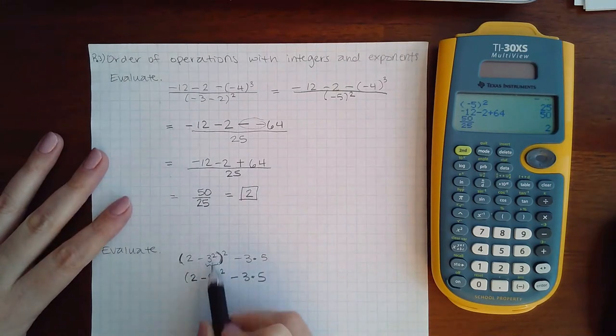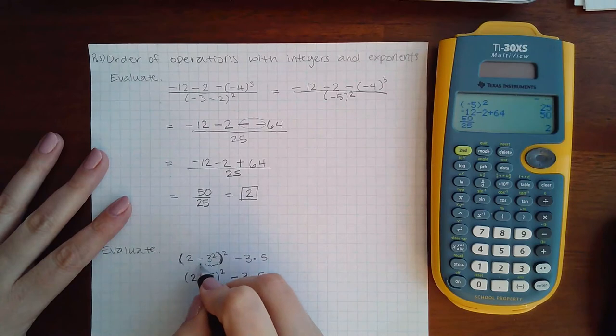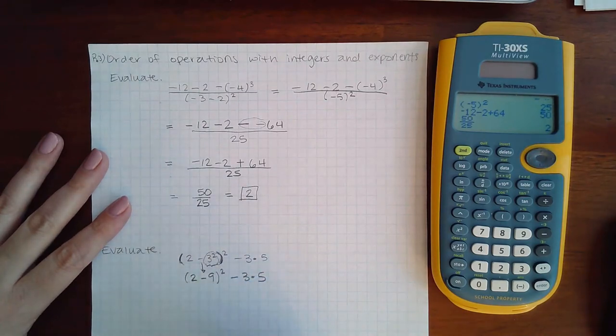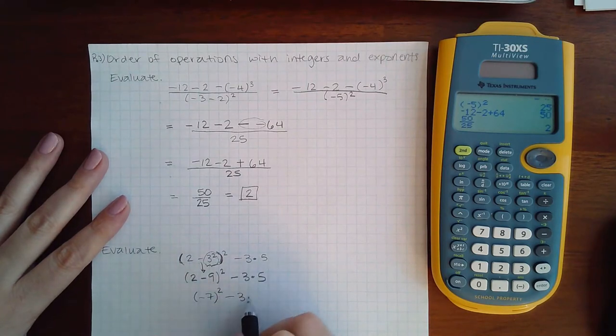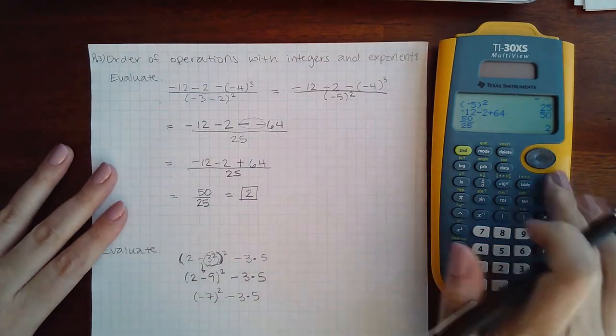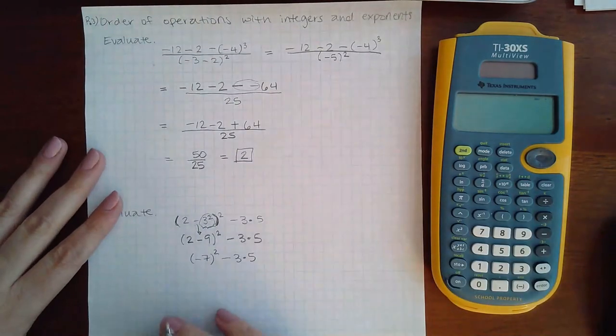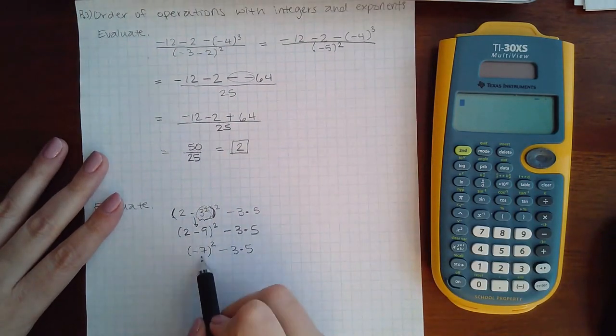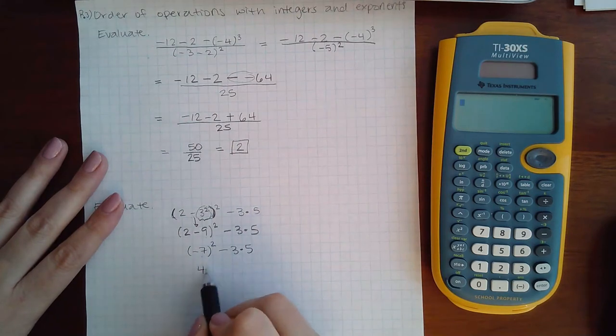Once I've done 3 squared, now notice I brought down the 2 and I brought down the minus and I only did 3 squared. Then I have to subtract this. I get negative 7 squared. And you can type each of these steps in your calculator or you can do them in your head. That is completely up to you. Then I've got to square the negative 7, which gives me 49.